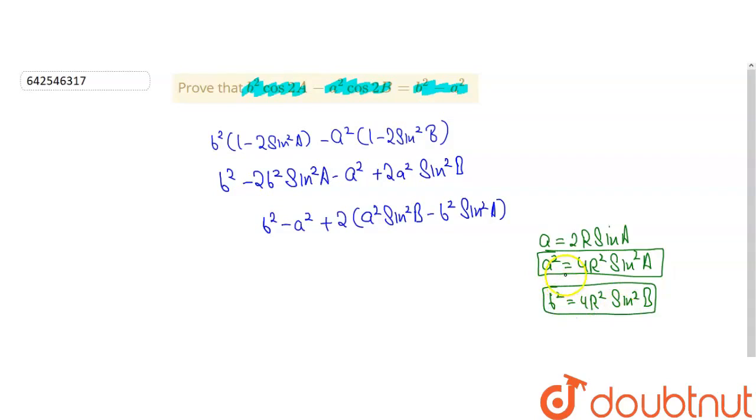For putting value of a squared and b squared in this equation we will get b squared minus a squared plus twice of 4r squared sin squared A sin squared B minus 4r squared sin squared A sin squared B.